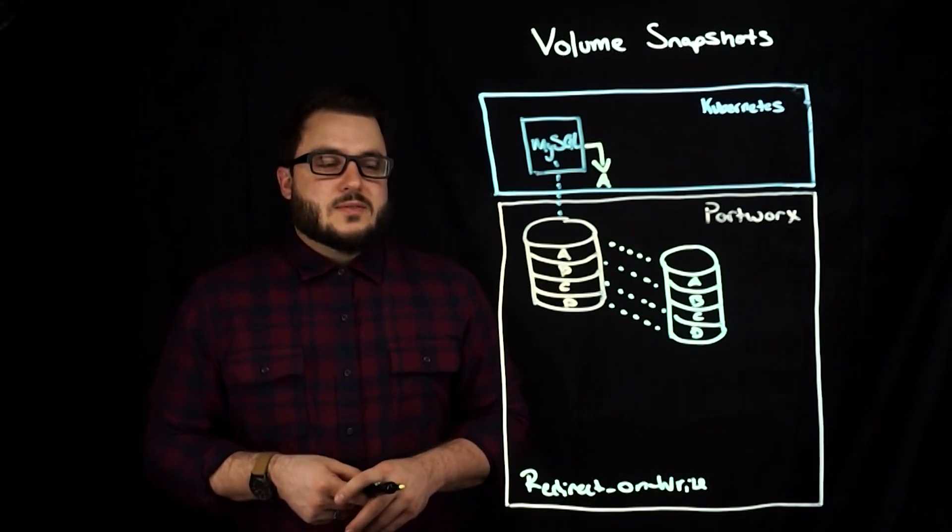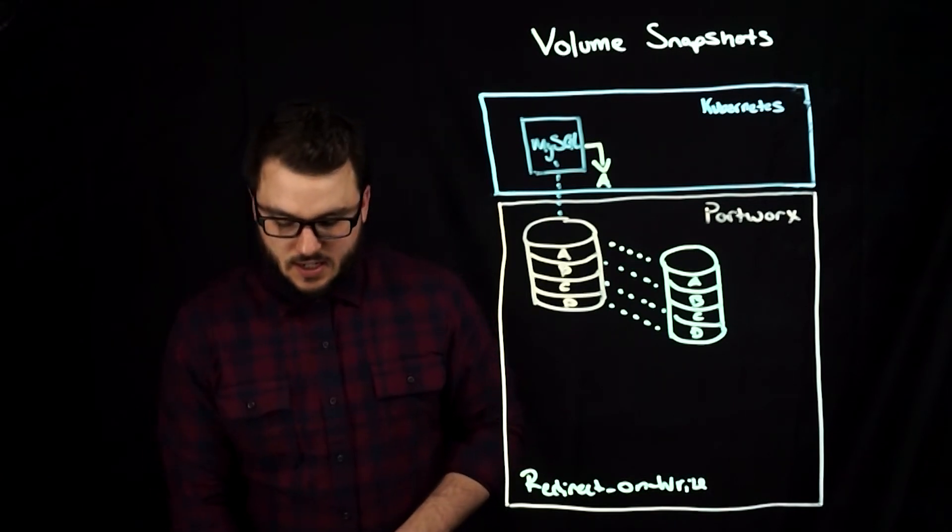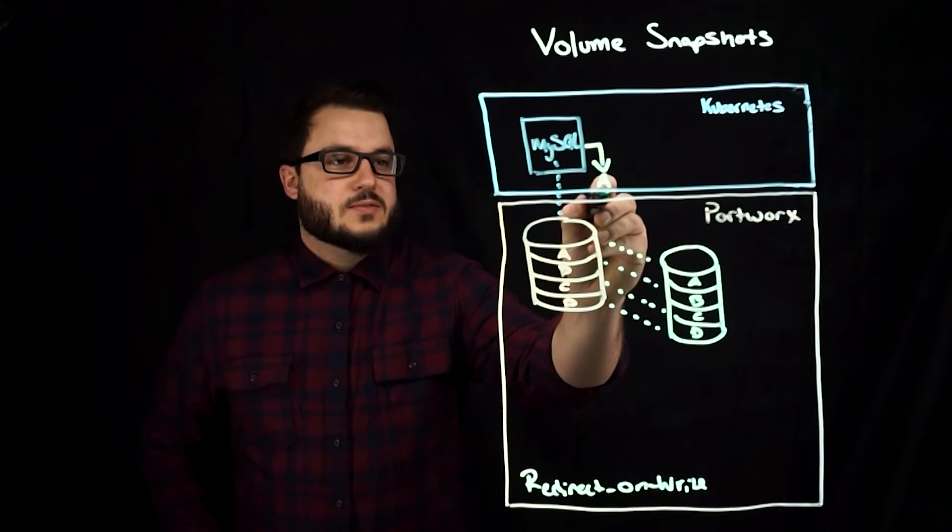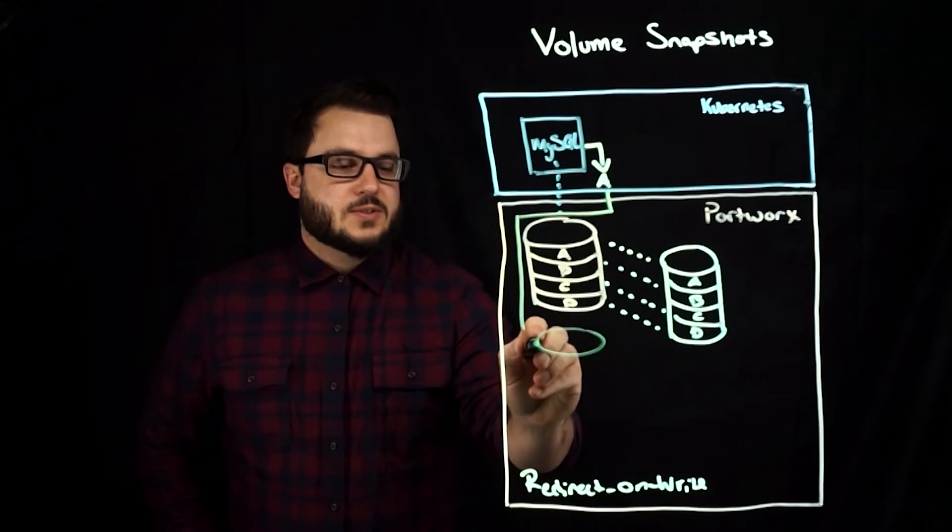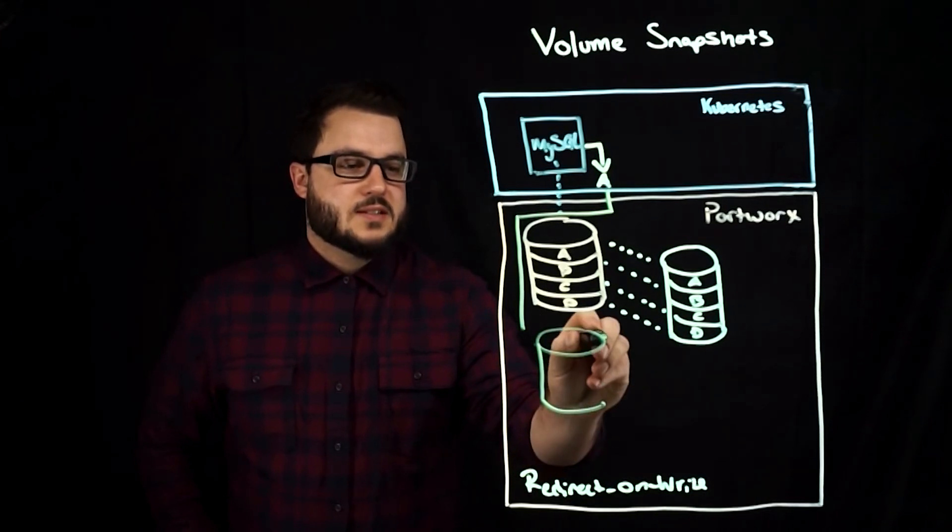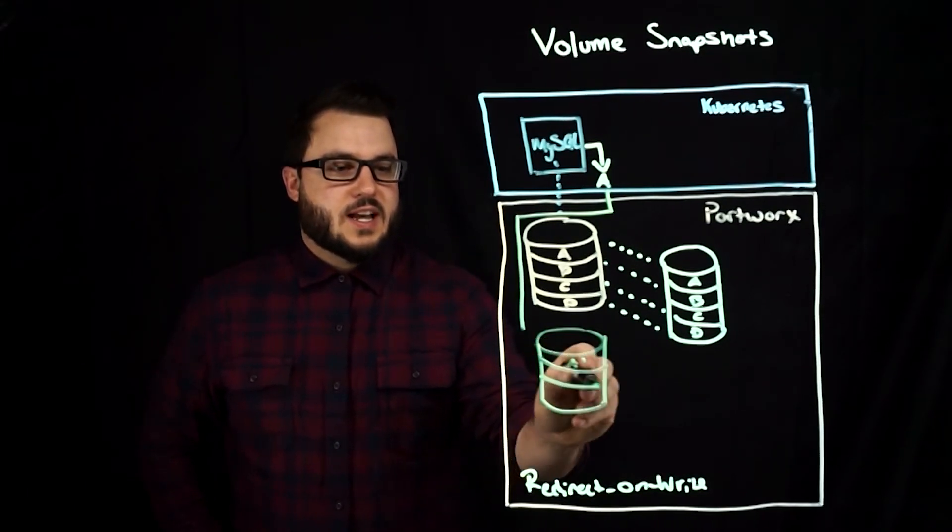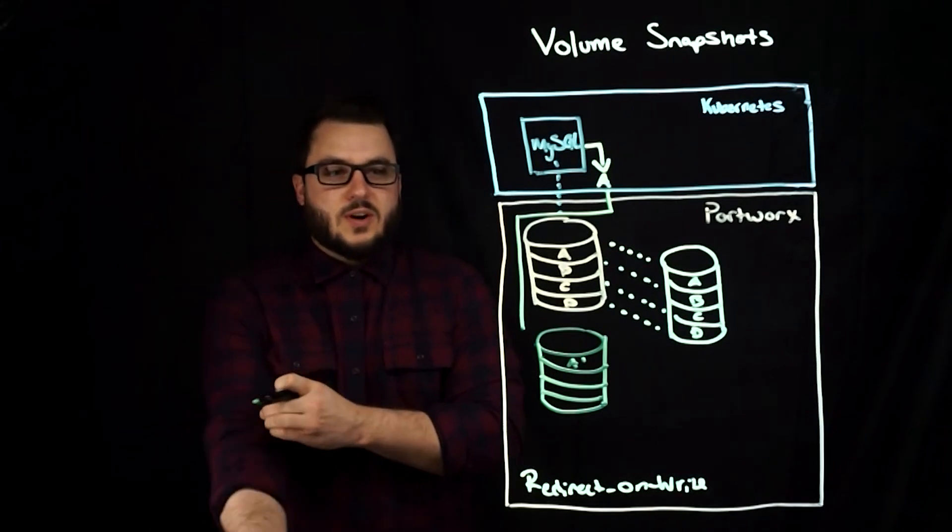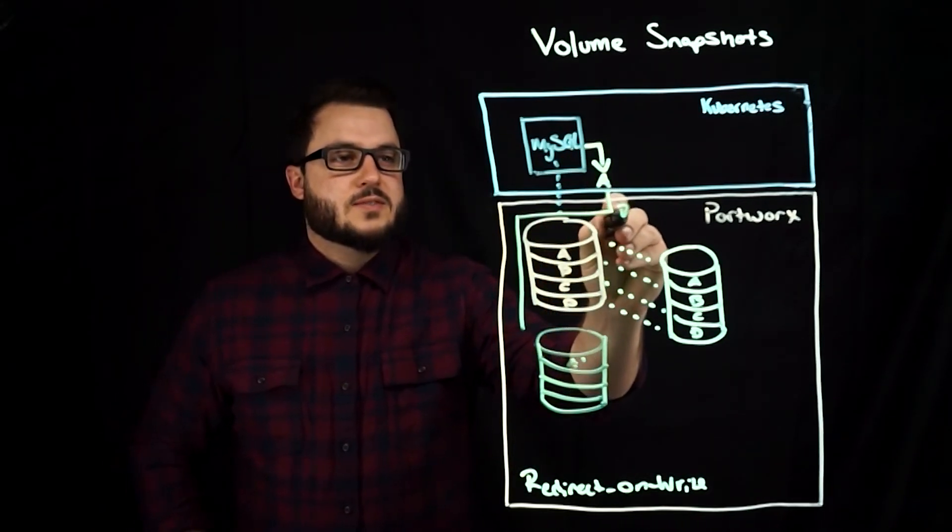So the way that Portworx does this is it will redirect this write to block A, and I'll do this in green, and redirect it to another space where it's sort of an A reference point. So what's happening is this is our redirect.